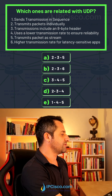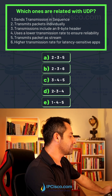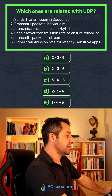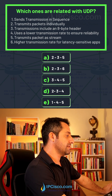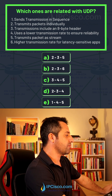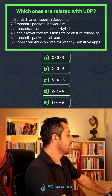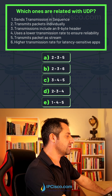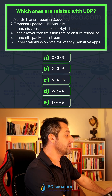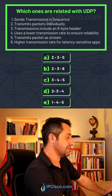Let's go to choices one by one. Continuous transmission — yes, this is the property of TCP. Transmits packets individually — this is true for UDP.